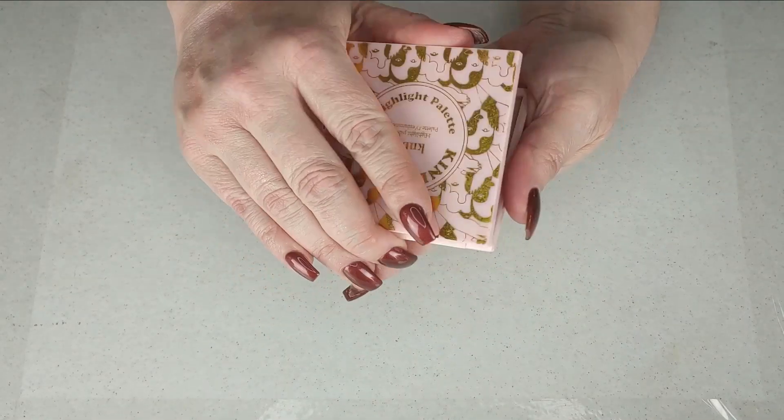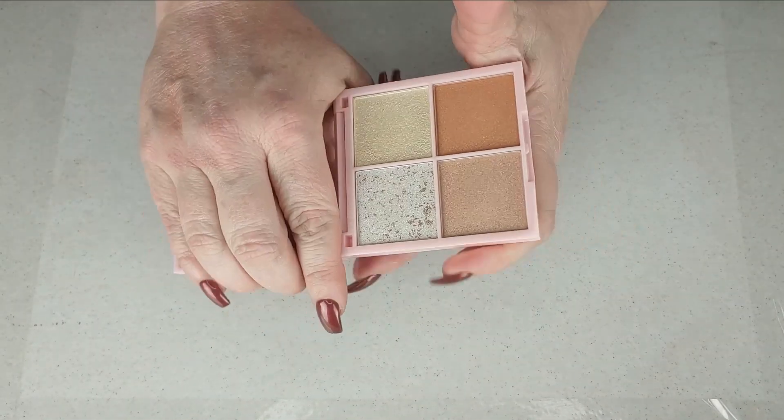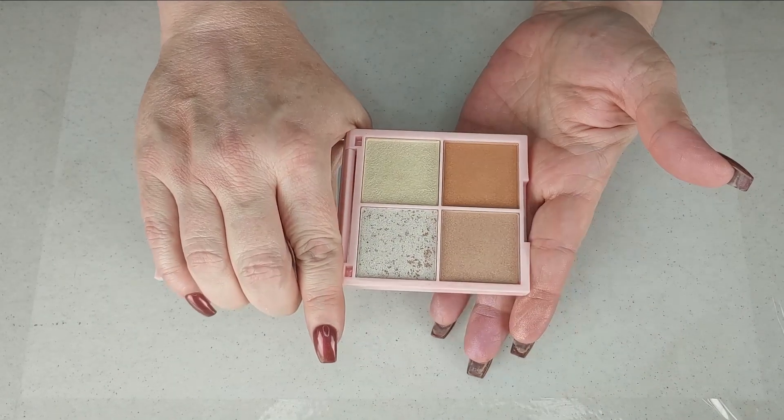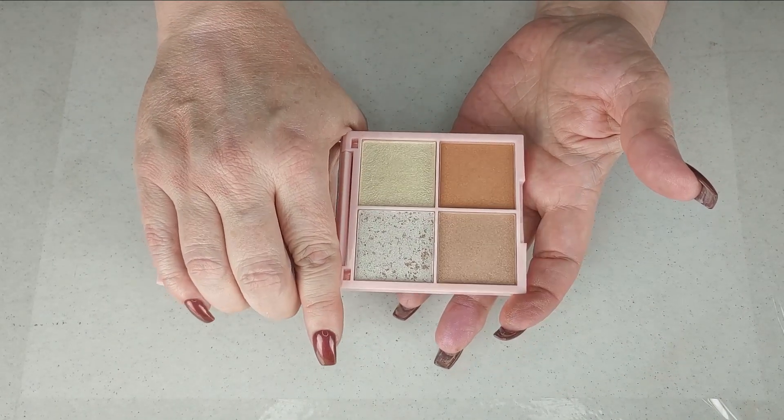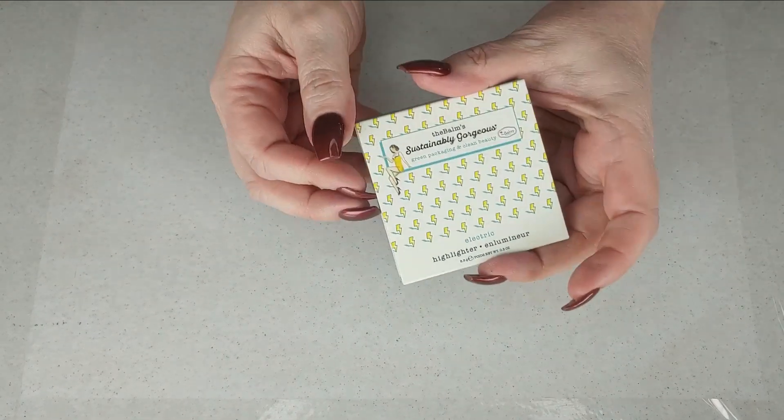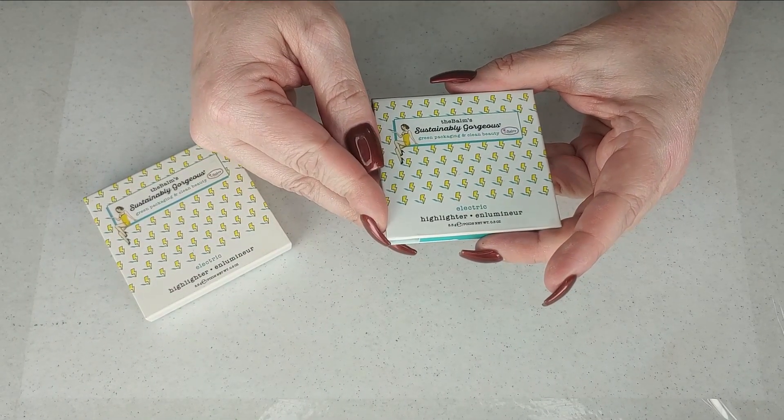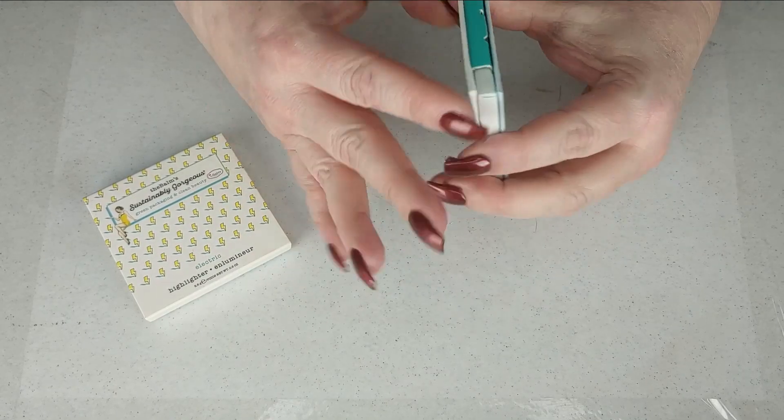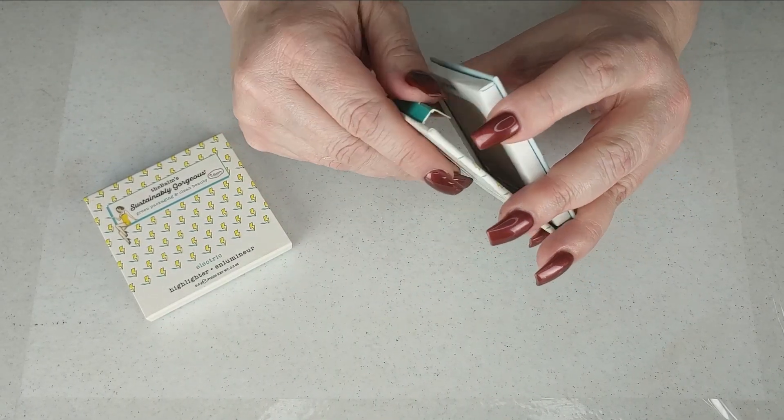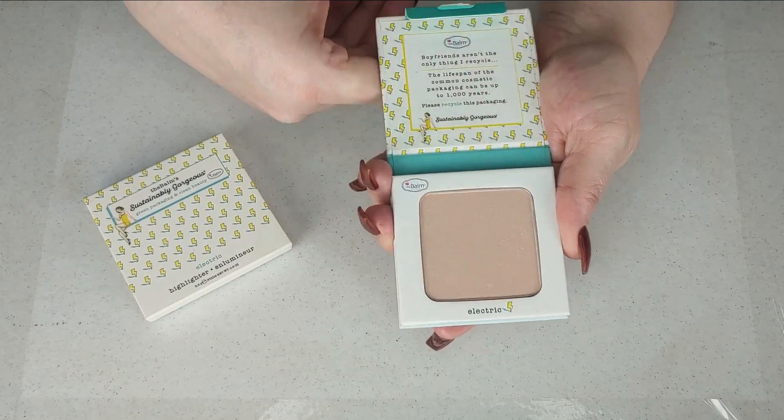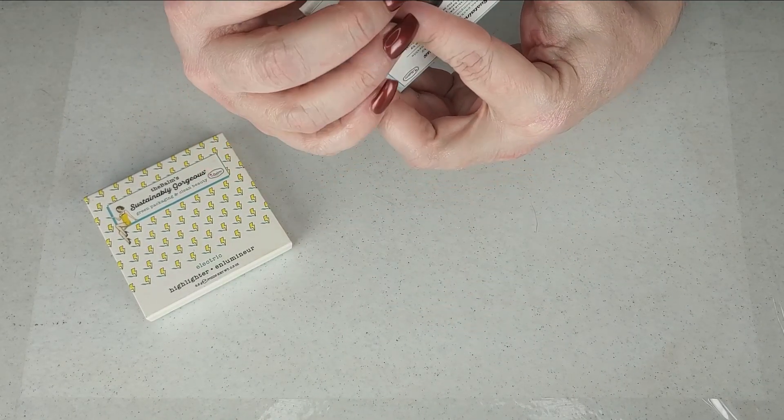But I don't know why I even swatched it because I really don't like a cream highlighter to begin with. Let's throw away that box and then I have this little Kinder Glow palette. It's pretty, I haven't used it yet but I'm keeping it. And then I recently in my Wanderlust spooky box I got this highlighter illuminator from The Balm, Sustainably Gorgeous. It's very pretty, it's a very natural highlight and I like that but I don't always want to be seen from the moon, you know what I'm saying.